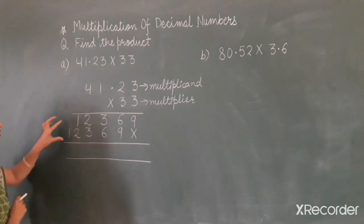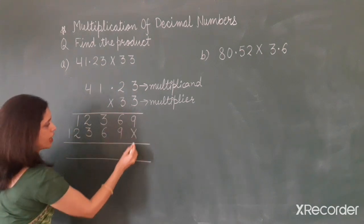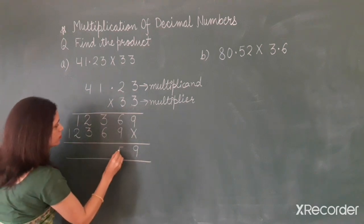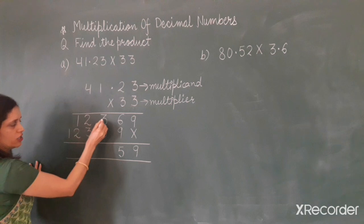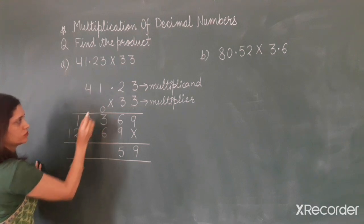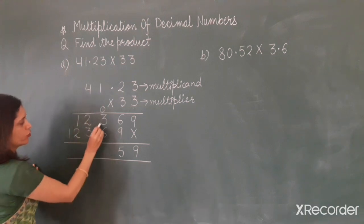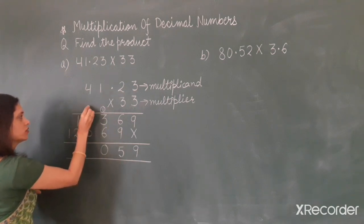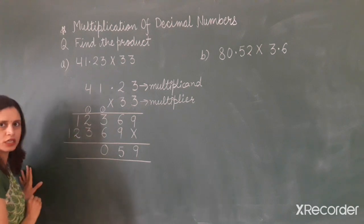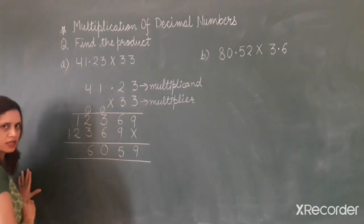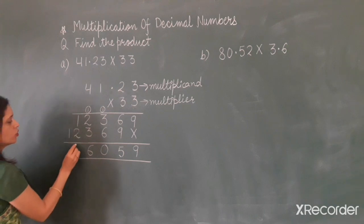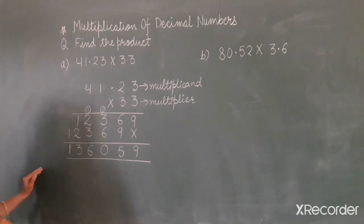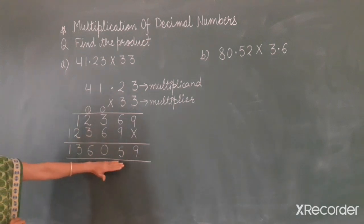Now we will add the partial products. Nine; six and nine is fifteen, one will carry over; one and three is four; four and six is ten, one will carry over; one and two is three; three and three is six; one and two is three. And we write one down here.